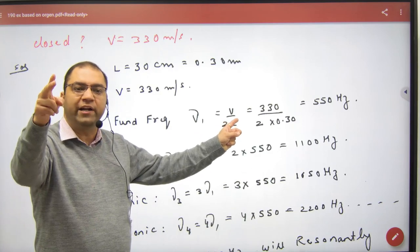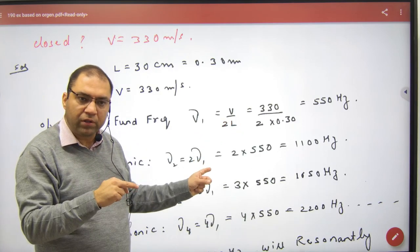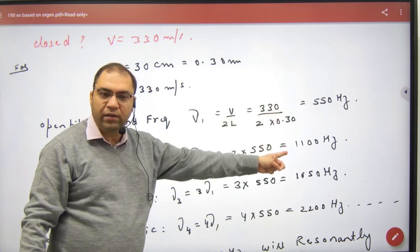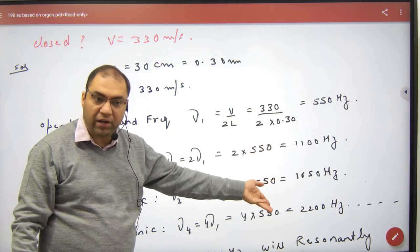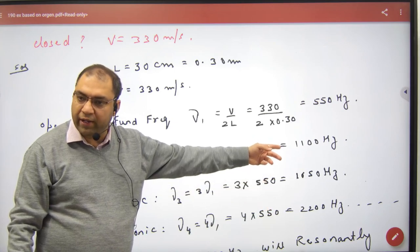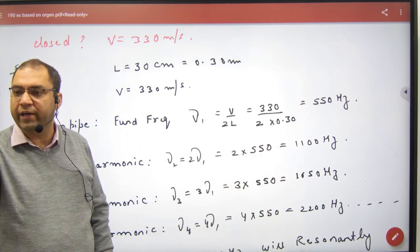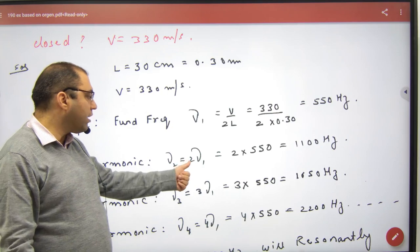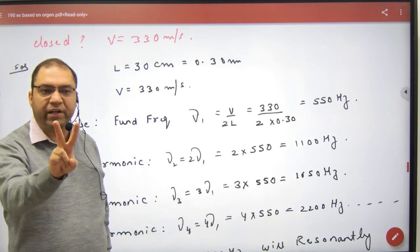What is the other frequency? Pipe open at both ends, 2 times nu_1. If you double it, the answer is 1100. So which mode of vibration? Second. And which harmonic? 2. Second harmonic is the answer.